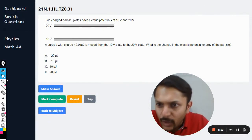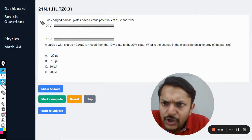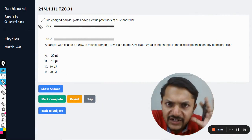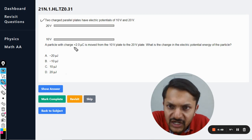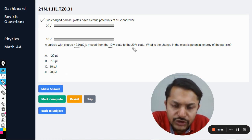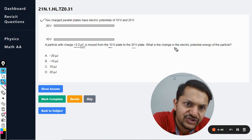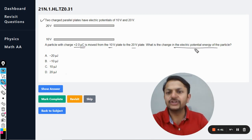Okay dear students, let us see what is there in this question. Two charged parallel plates have electric potential of 10 volt and 20 volt. A particle with charge plus 2 micro coulomb is moved from the 10 volt plate to the 20 volt plate. What is the change in electric potential energy of the particle?